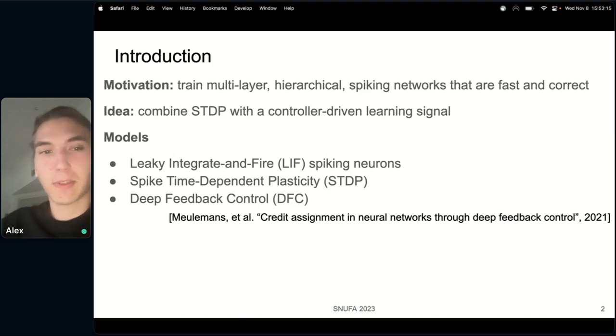And the last thing is deep feedback control. This is an existing work, maybe less known, fairly recent, on how to train networks of neurons without backprop essentially. So using a method that is local in space and time, it is inspired by control theory but also has interesting explanations from bioplausibility side. This is based on work by Millmans and others in the paper from 2021.